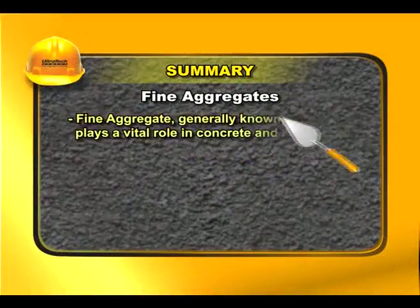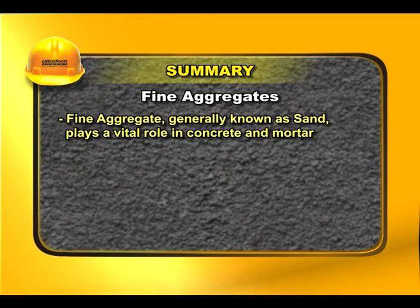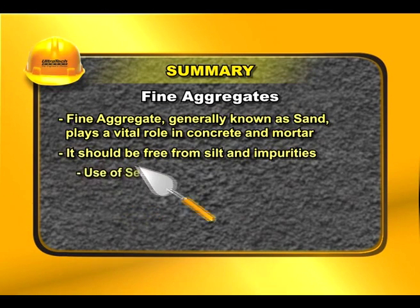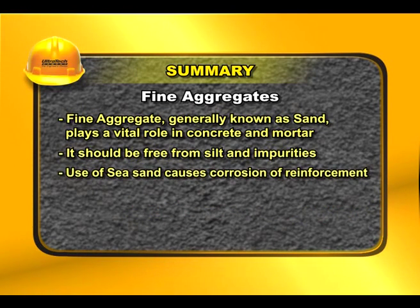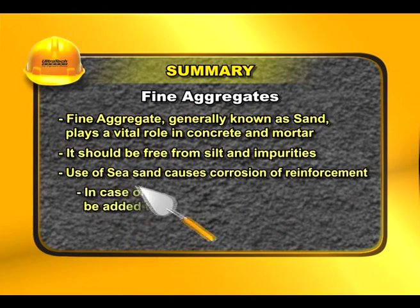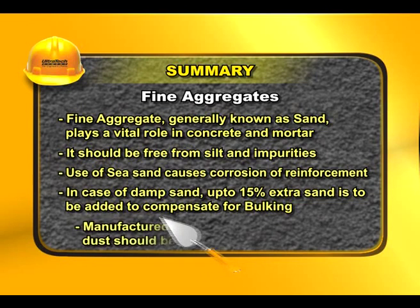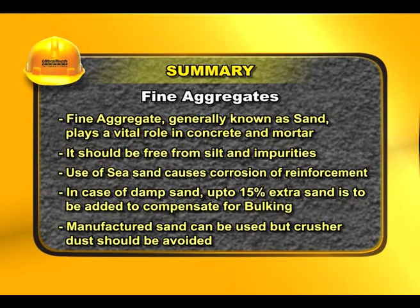Fine aggregate, generally known as sand, plays a vital role in concrete and mortar. It should be free from silt and impurities. Use of sea sand causes corrosion of reinforcement. In case of damp sand, up to 15% extra sand is to be added to compensate for bulking. Manufactured sand can be used, but crusher dust should be avoided.